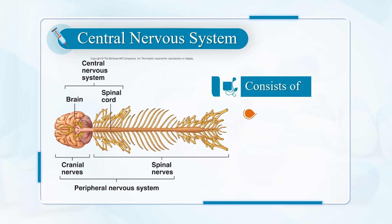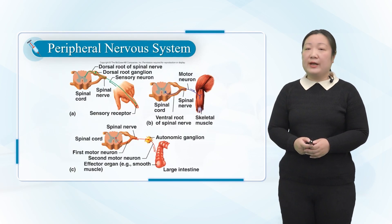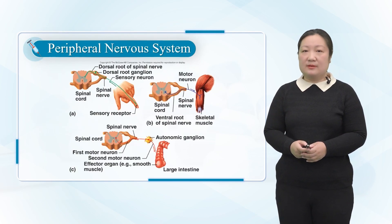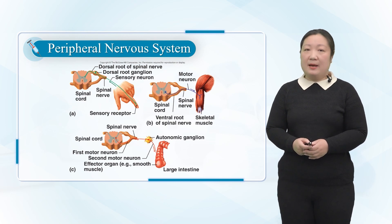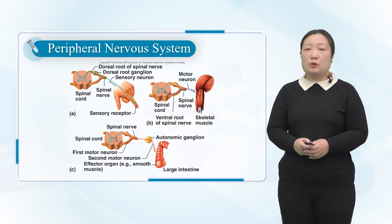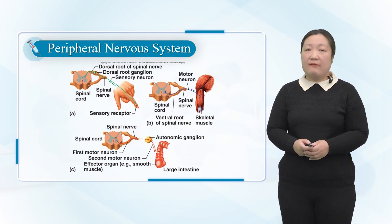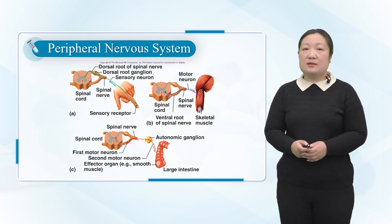The human nervous system is composed of the brain, spinal cord, and the nerves they emit. Among them, the brain and spinal cord are the central part of the nervous system and constitute the central nervous system. It plays a leading role in the body's function regulation system, directly or indirectly making the body's various functional activities integrated as a whole to cope with changes in the internal and external environment, so that the body can survive.